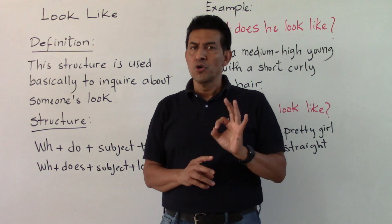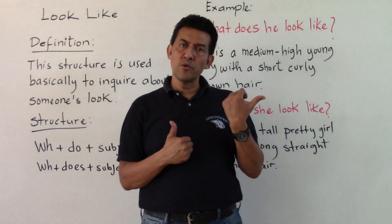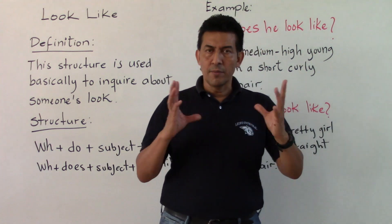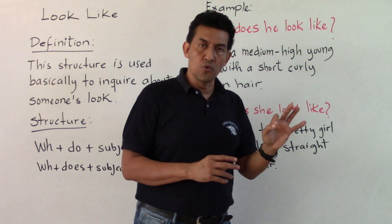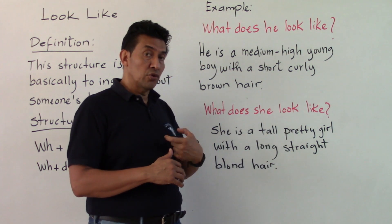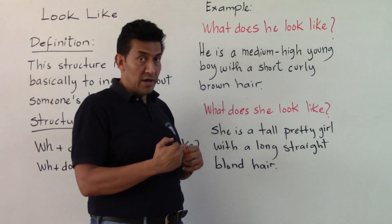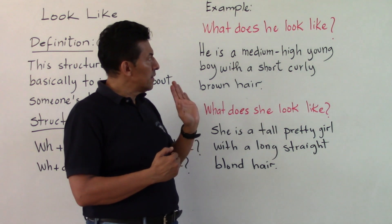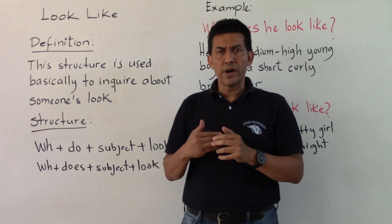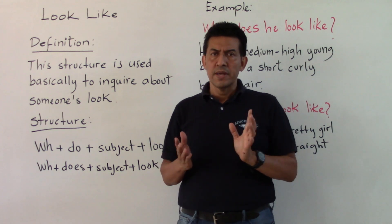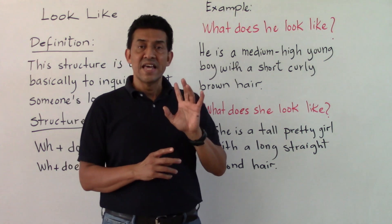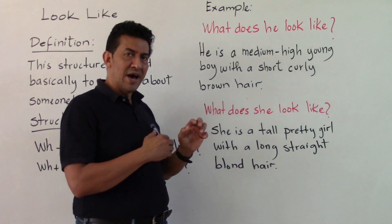Now, in this description we have already seen the concepts of appearance and personality. Here we are going to describe how the person looks. Remember that appearance is above all physical. You can also ask about the appearance of something. Let's see the example: 'What does she look like? And how does she look?'